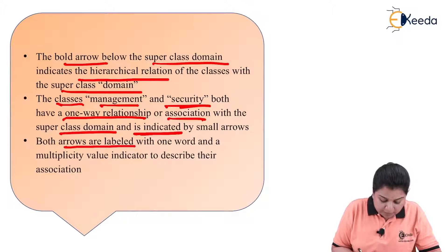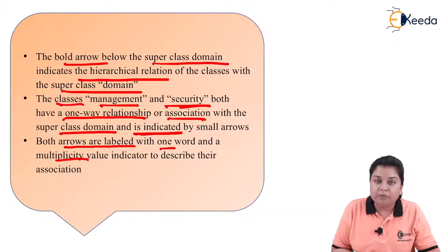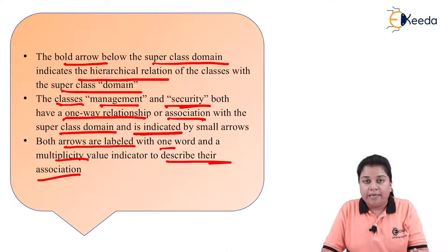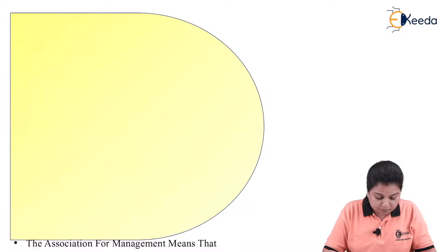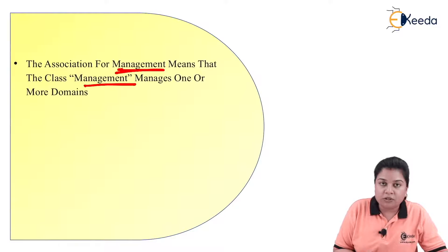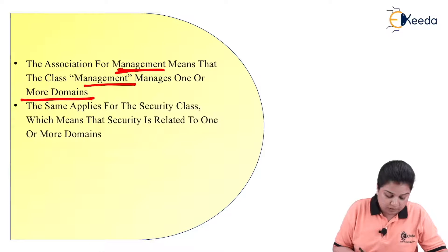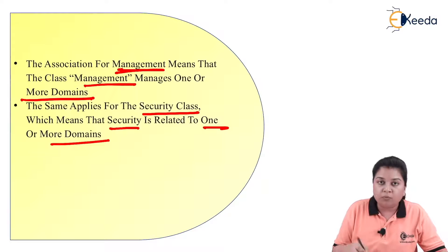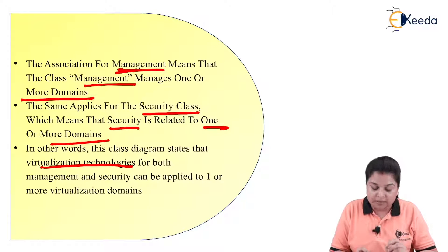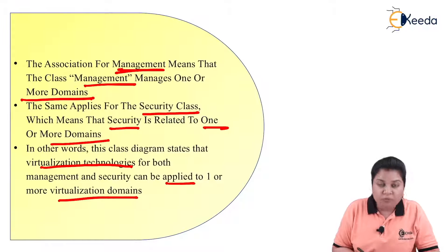This was a brief description of the diagram of the taxonomy of virtualization. The association for management means that the class management manages one or more domains. The same applies for the security class, which means that security is related to one or more domains. In other words, the above diagram states that virtualization technologies for both management and security can be applied to one or more virtualization domain.